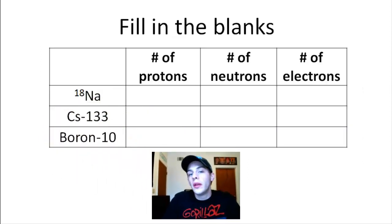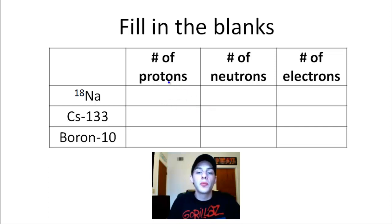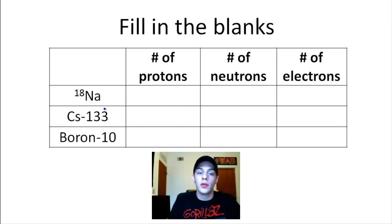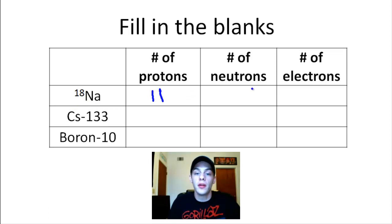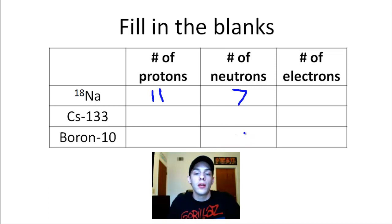With that in mind, let's fill in the blanks on this table. We're going to fill in how many protons, neutrons, and electrons each of these isotopes has. First: sodium-18. How many protons does sodium-18 have? The periodic table tells us sodium has an atomic number of 11, so it has 11 protons. To get the number of neutrons, we take the mass number 18 and subtract 11, giving us 7 neutrons. The number of electrons equals the number of protons — we're talking about neutral atoms here, not ions — so sodium-18 has 11 electrons.